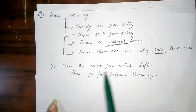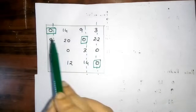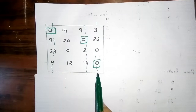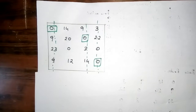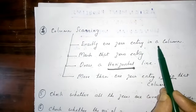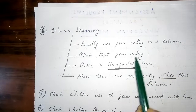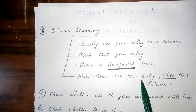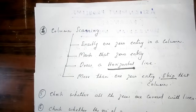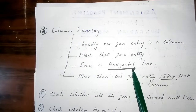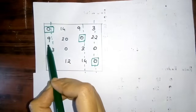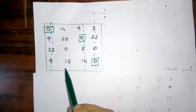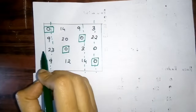If there are more zero entries left, go to column scanning. For column scanning: if a column has exactly one zero entry, mark that zero and draw a horizontal line. If more than one zero entry, skip that column. First column — already crossed off. Second column — one zero, so mark it and draw a horizontal line.